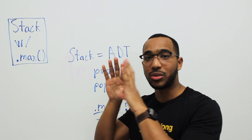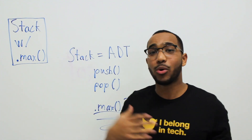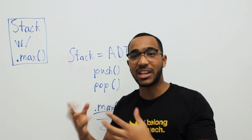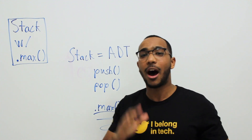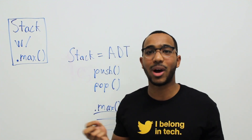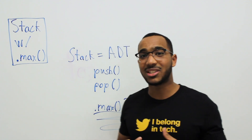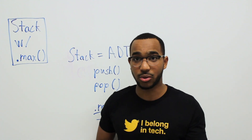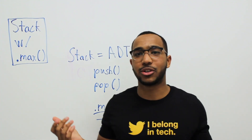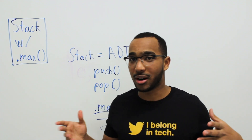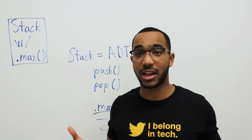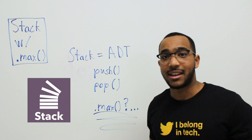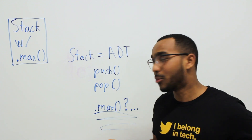A stack is an abstract data type. What that means is we support an interface to the outside world — we say 'I'm going to give you these behaviors and properties; you don't need to know how I do this.' This is why they call it a contract. We say 'I'm going to give you these services; don't worry about how I do them.' It's like hiring an electrician — you just care that he fixes your lights, not how he does it.